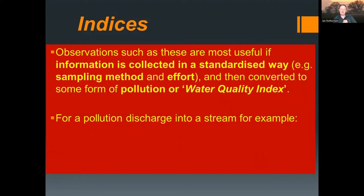One way to use this information — and it can be very simple or very complex — is through what we call indices. Observations such as looking at the level of pollution tolerance are most useful if information is collected in a standardized way, using a standardized sampling method and standardized effort — a particular technique applied for a certain amount of time at a certain frequency — then converted to some sort of pollution or water quality index.